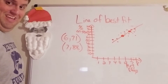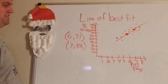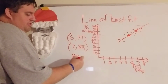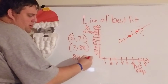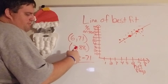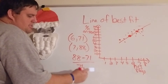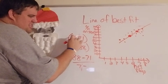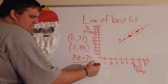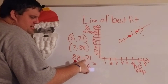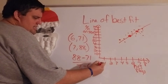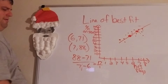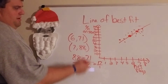Now I'm going to write the equation in slope-intercept form — this should be something we already know how to do. To find the slope, I use y₂ minus y₁ over x₂ minus x₁. That gives me 17 over 1, so my slope is 17.